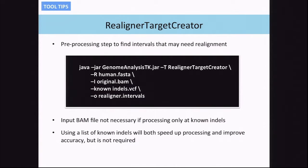This preprocessing step uses the command line to call RealignerTargetCreator with a reference genome. The original BAM file is optional input, and a list of known indels is also optional, but you must have at least one of these two. The output is a list of intervals where the aligner is going to realign. Using a list of known indels can dramatically speed up the process and improve accuracy.